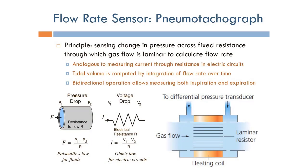To measure the flow rate, we have a very popular flow rate sensor called the pneumotachograph. The principle is that sensing change in pressure across a fixed resistance, through which the gas flow is laminar, can be used to calculate the flow rate.